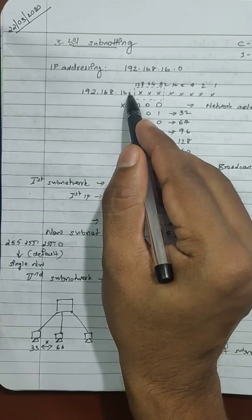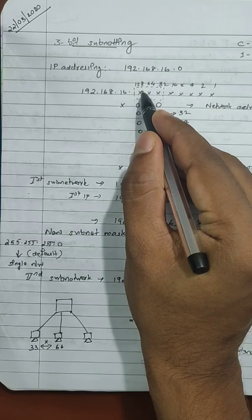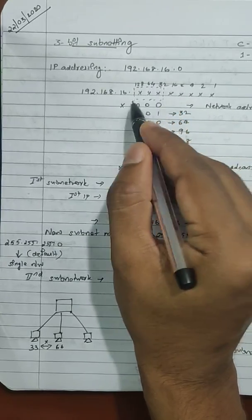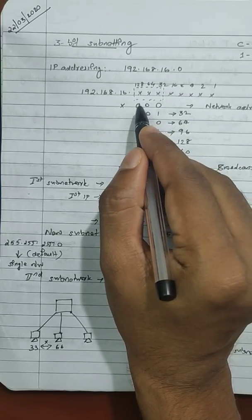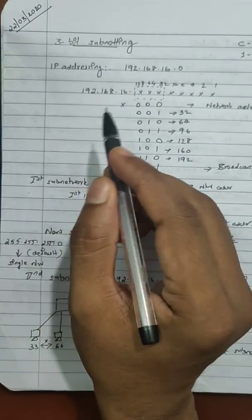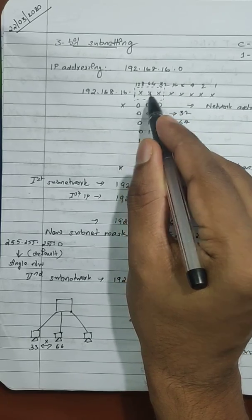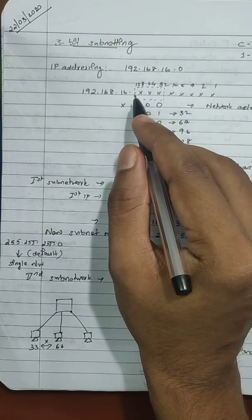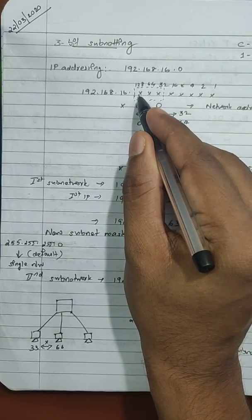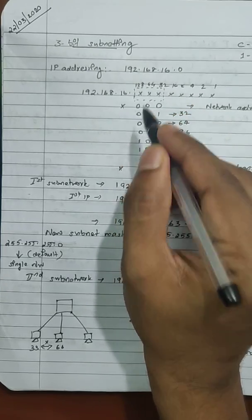In the last video on 2-bit subnetting, we were borrowing 2 bits — the 128 part and 64 — from the host ID part to do the subnetting. For 3-bit subnetting, the procedure is the same, but we have to borrow 3 bits: consecutive 3 bits from the left-hand side of the last octet — 128, 64, and 32. These 3 bits are taken for subnetting.